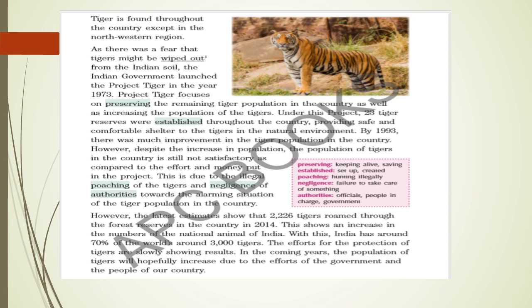The latest estimate shows that 2,226 tigers roamed through the forest reserves in the country in 2014, showing an increase in the numbers of the national animal. With this, India has around 70% of the world's approximately 3,000 tigers. The efforts for the protection of tigers are slowly showing results, and hopefully the population will continue to increase due to the efforts of both the government and the people of the country.